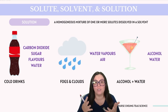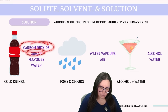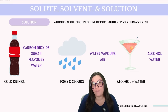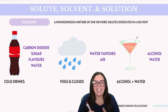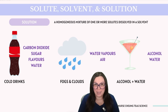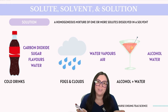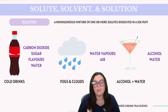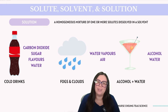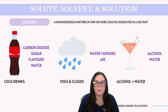Here are some common examples of solutions. Cold drinks contain a combination of carbon dioxide, sugar, flavors, and water — when mixed together they form a homogeneous mixture, making it a solution. In the case of fog and clouds, water vapors are dissolved in air, making it a homogeneous mixture. When alcohol is mixed into water it dissolves completely, resulting in a homogeneous mixture. All three examples represent solutions where the solute is completely dissolved in the solvent, creating a uniform mixture without any visible separation.